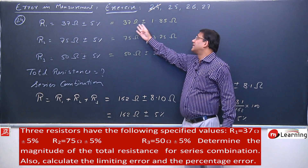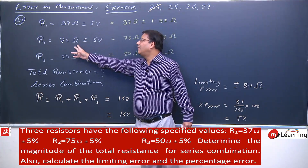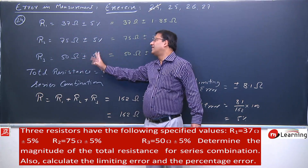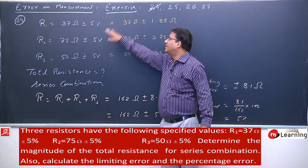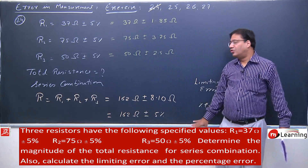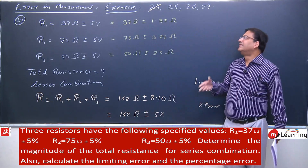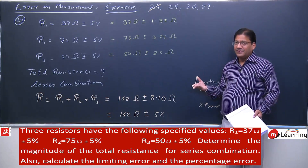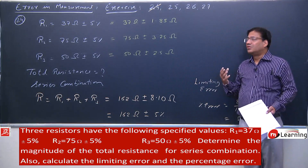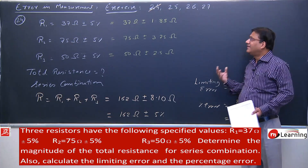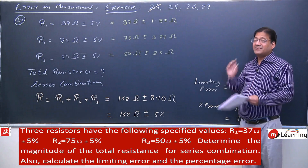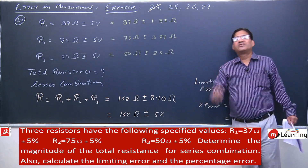Notice that R1 is 37 ohm ±5%, R2 is 75 ohm ±5%, R3 is 50 ohm ±5%. When added, the absolute errors add, and the final total resistance R is also 162 ohm ±5%. Understand the concept applied and draw conclusions from the answer. Now start reading the 25th problem.